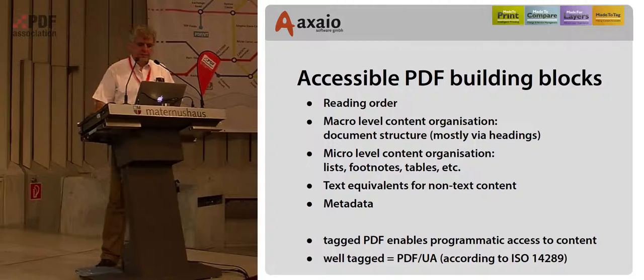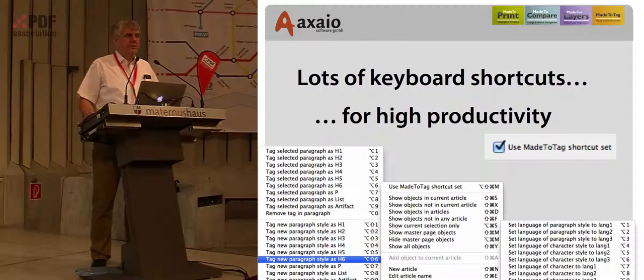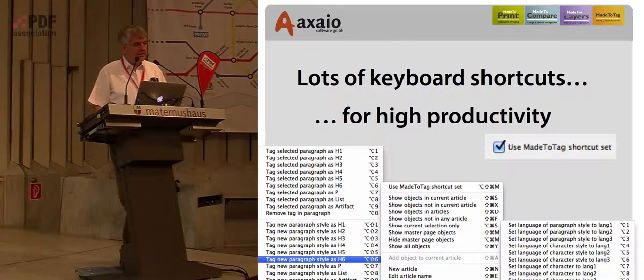Made to Tag is about taking your InDesign documents and preparing them so that you can have fully conforming PDF-UA files on output. It uses the built-in features of Adobe InDesign — create tagged PDF — but there are a few pieces missing. In order to establish those missing pieces, it offers a lot of productivity aspects like keyboard shortcuts so that you can work very efficiently and quickly.